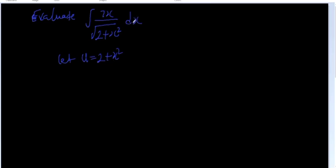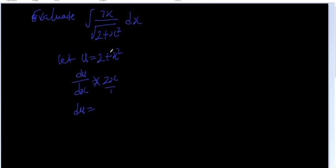Since you want to find an expression for dx, you differentiate. You have du/dx equal to 2x, then cross multiplying gives du equal to 2x dx. To find dx, you divide both sides by 2x, so dx equals du divided by 2x.